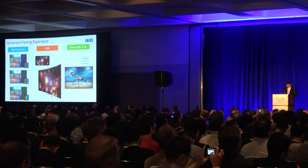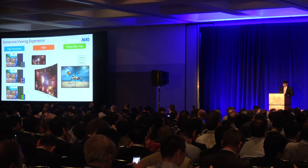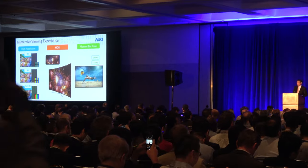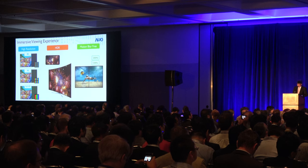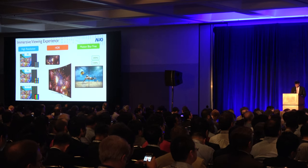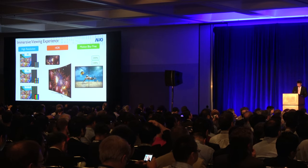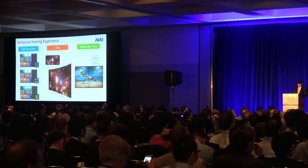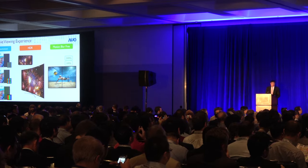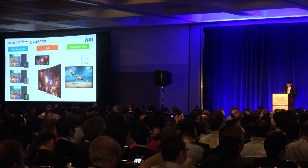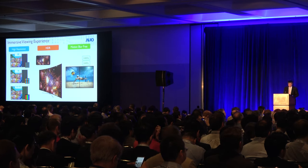4K resolution is a must-have when consumers replace their TV. TV makers are working to develop even higher 8K resolution. Netflix has launched high dynamic range video service, which helps speed up the penetration rate in TV. HDR is also extending to smartphones, with major brands introducing features to premium models this year. Motion blur-free high refresh rate gaming scenes can be shown smoothly with no lag at all.